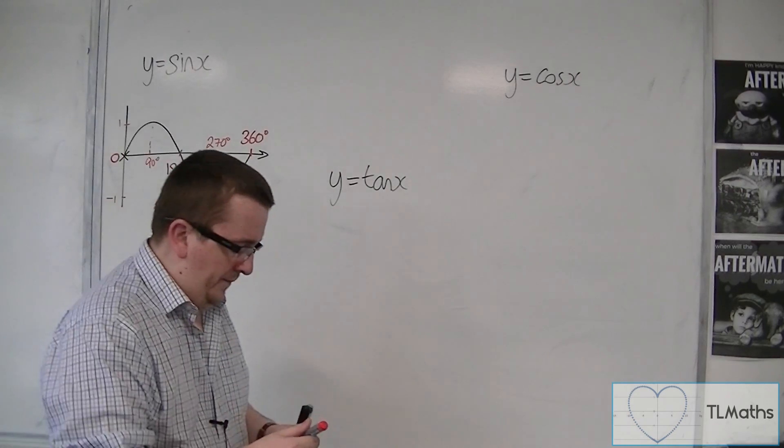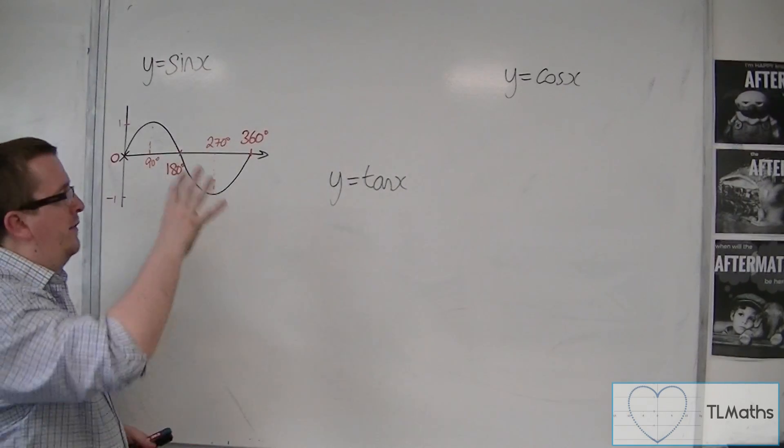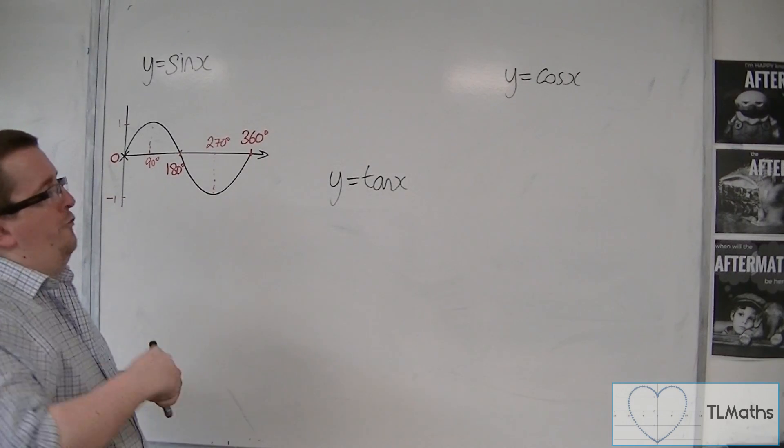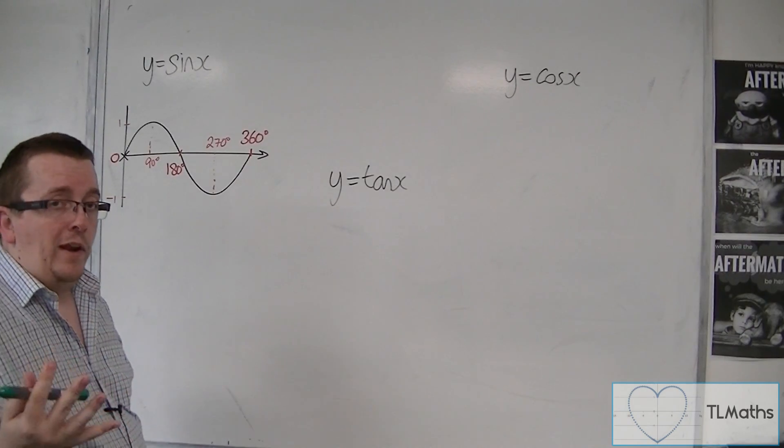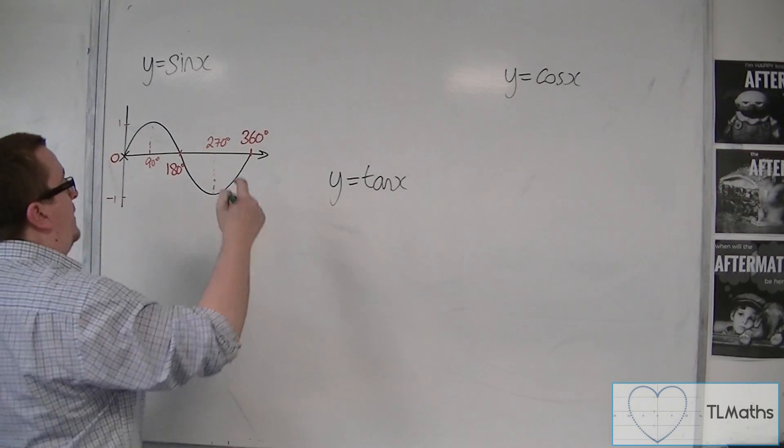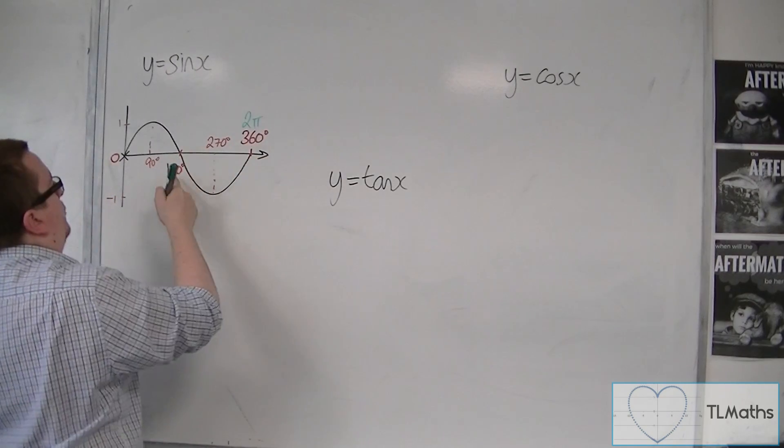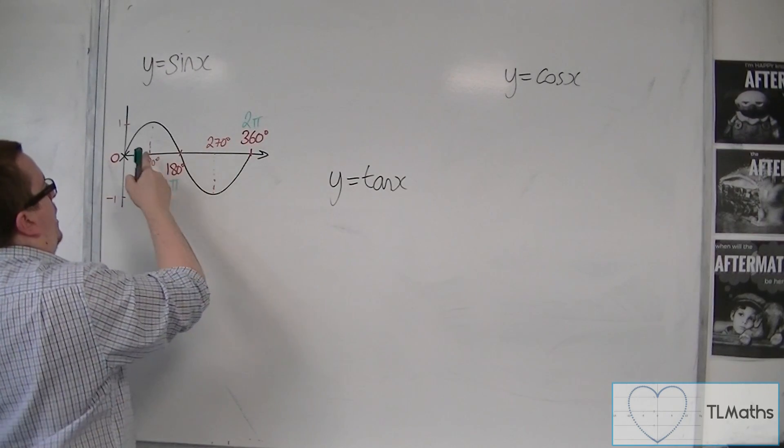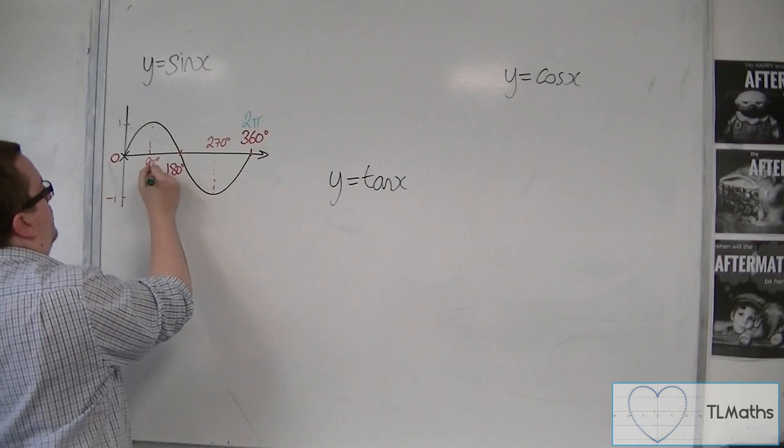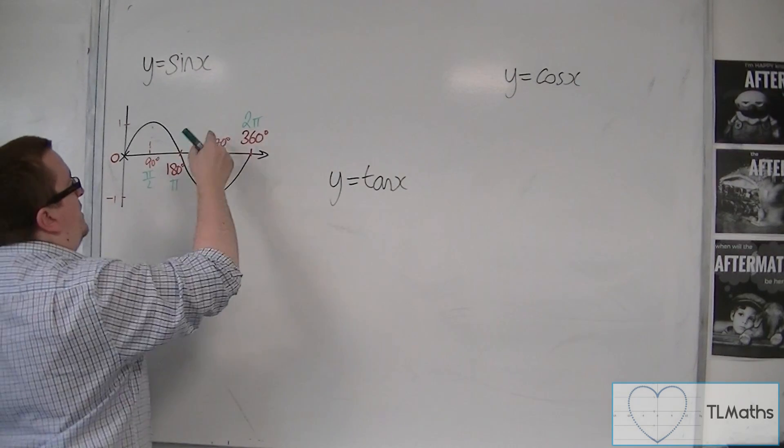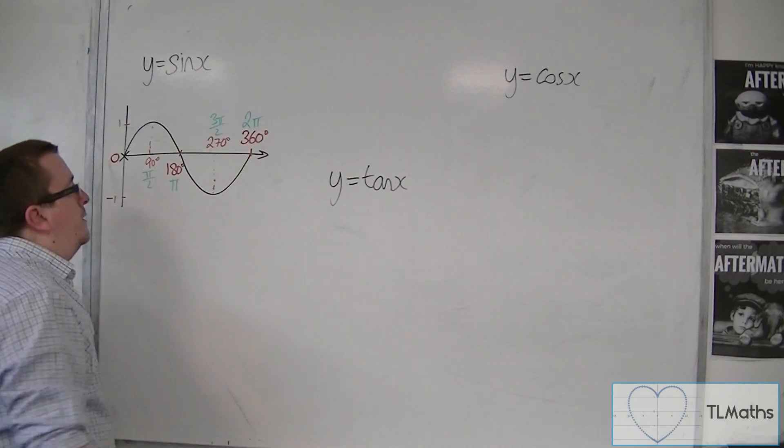Before we go to the cosine curve, we're best to put this into radians as well. From our radians knowledge, 2π is 360 degrees, so we would write this as 2π. This would be π. Half of π is π/2, so 90 degrees corresponds to π/2, and 270 degrees corresponds to 3π/2.